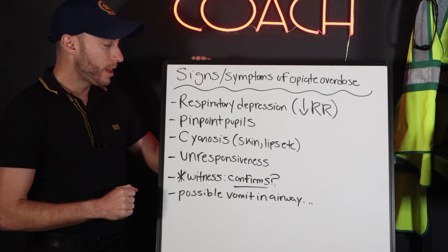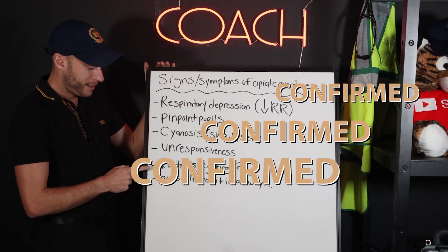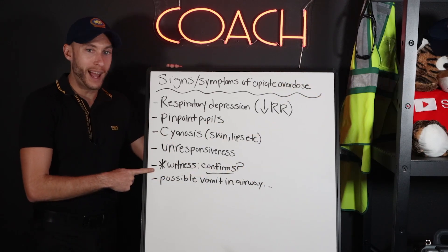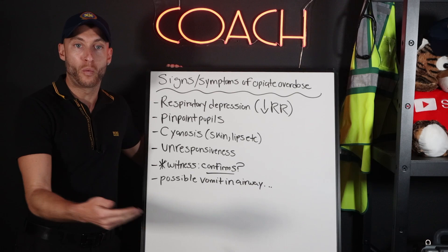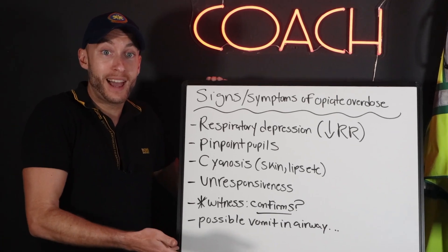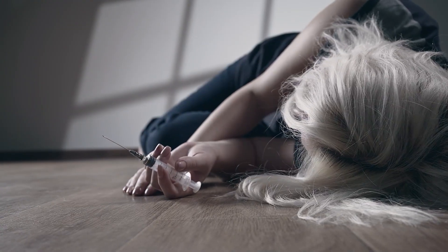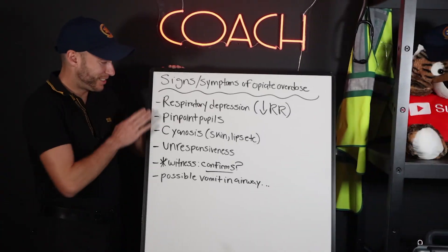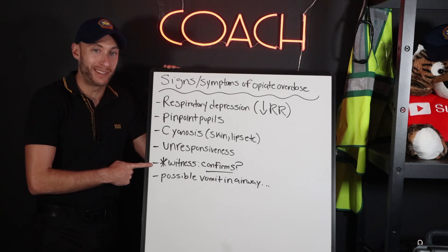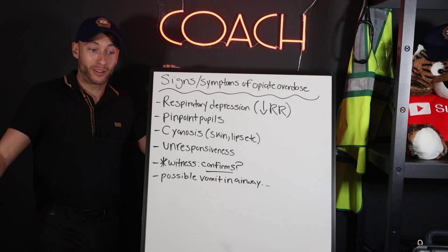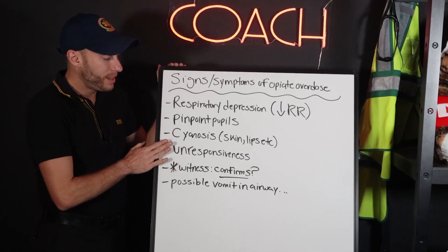Here's a star one — how do we really confirm? It's not always going to happen, but you may find that a bystander, an acquaintance, a friend, or a witness is there to basically confirm: yeah, he or she overdosed — 'I was with them, they took this, and now they're like this.' And then you see all the signs; it's pretty clear-cut. A lot of times you find this patient because a bystander calls 911 saying someone's unresponsive, and then you find out what it is. So this is key.